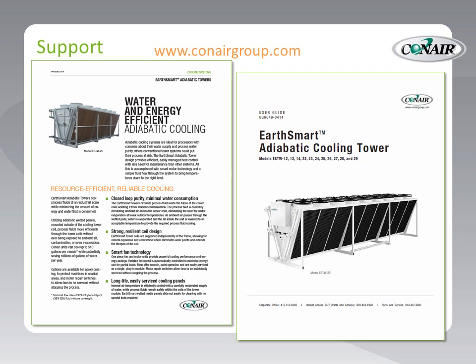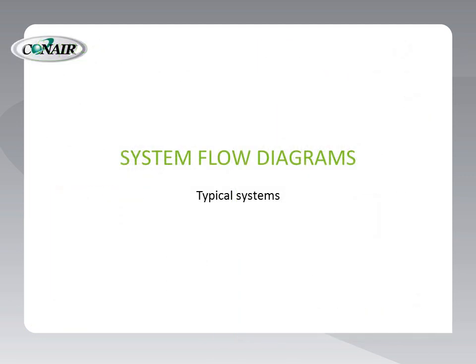A specification sheet and instruction manual are ready for review on our website, www.conairgroup.com. The spec sheet details Conair EarthSmart adiabatic tower units starting with just two fans capable of handling about 50 GPM, up to a double-row 18-fan unit that can handle over 500 gallons per minute of processed fluid. Conair has also prepared an extensive array of system flow diagrams representing what most heat transfer customers are looking for in adiabatic systems.